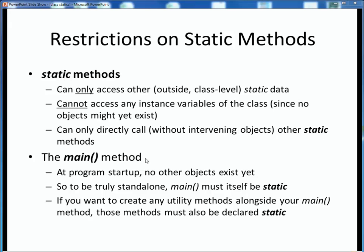Consider again the main method as our go-to example. We've now been reminded that the main method is in fact a static method. At program startup there are no other objects yet in existence to call the main method upon. So to be truly standalone and to get the program execution ball in motion, the main method must itself be static. Therefore, if you want to carve up your program into additional methods located within the same class as main itself, and you want to call those methods directly by name from main, any such methods must also themselves be declared as static.